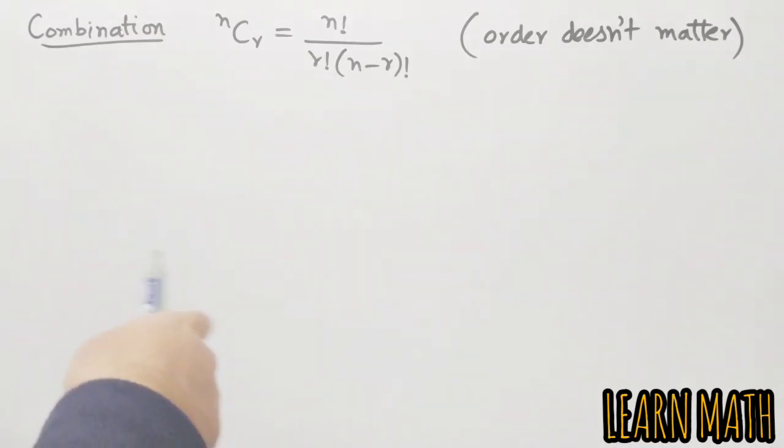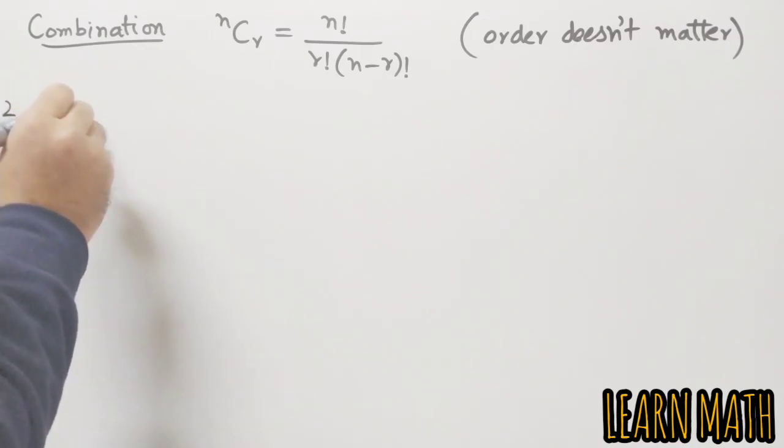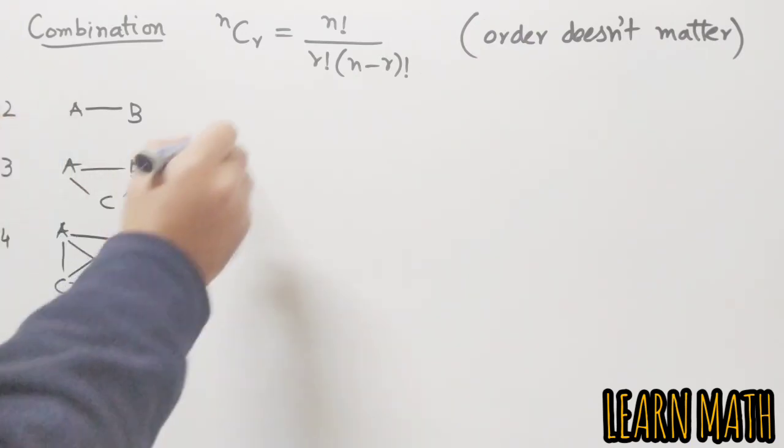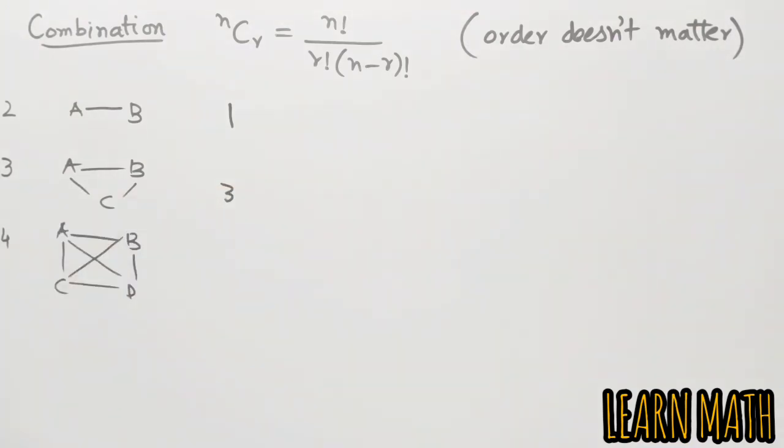Now going to our question, suppose we have two persons A and B, so there will be just one handshake. If we have three persons A, B, and C, so there will be three handshakes. And if we have four persons, let A, B, C, and D, so one, two, three, four, five, six. So if there are four persons there are six handshakes.